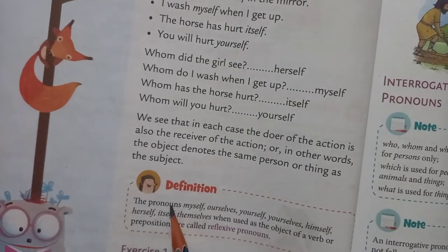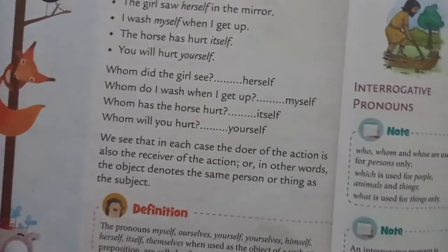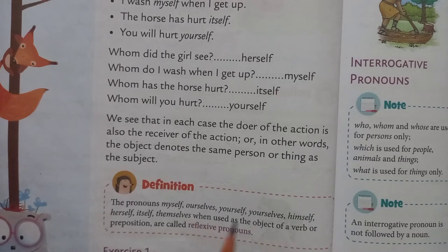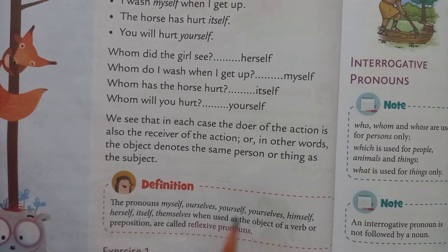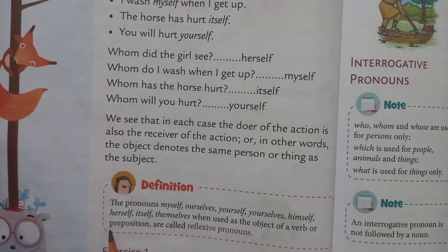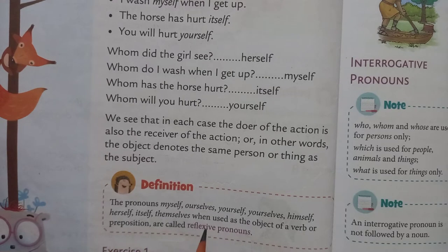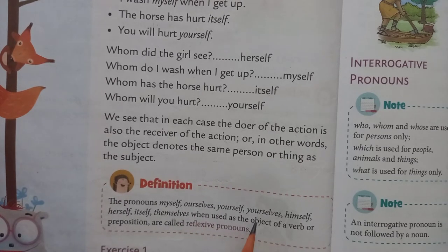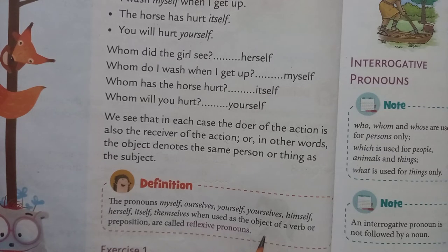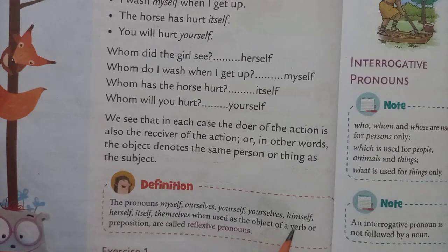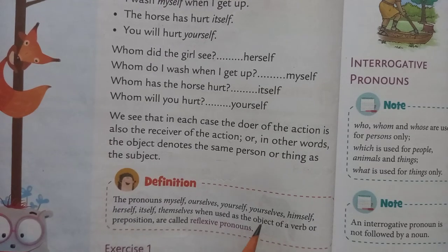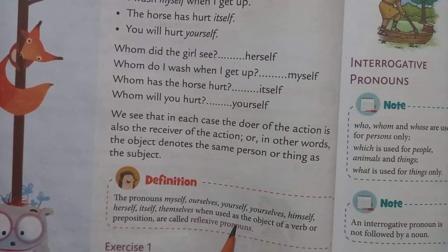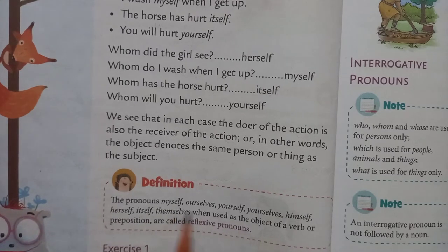See the definition. The pronouns myself, ourselves, yourself, himself, herself, itself, themselves — when used as the object of a verb or preposition — are called reflexive pronouns. In reflexive pronouns, we use 'self' or 'selves'.